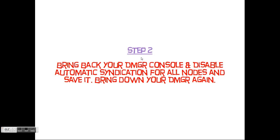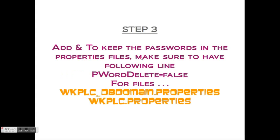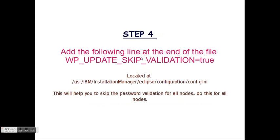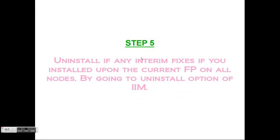Step 2: Bring up your Deployment Manager console and disable automatic synchronization for all nodes, save it, and then shut down your Deployment Manager console. Keep the password in the properties files and make sure you add pword.delete equal to false, especially for the files wplc_dvdomain.properties and wplc.properties, and save them. Then add the string wplpupdates.skipvalidation equal to true at the end of the file located at installation manager eclipse configuration config.ini.